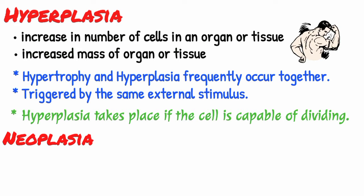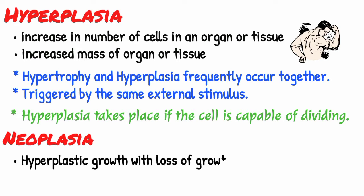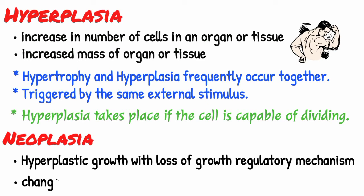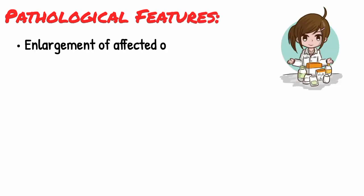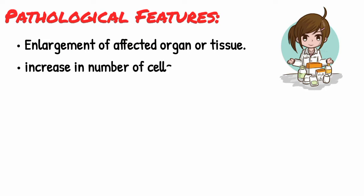Neoplasia differs from hyperplasia in having hyperplastic growth with loss of growth regulatory mechanism due to change in genetic composition. If we talk about the pathological features of hyperplasia, there is an enlargement of affected organ or tissue, and an increase in number of cells.